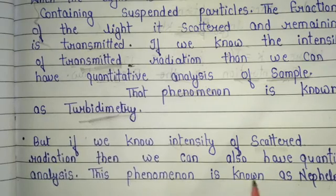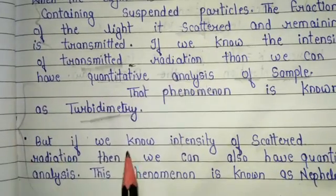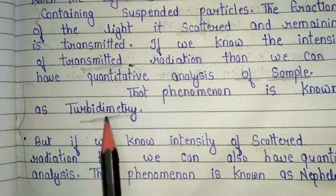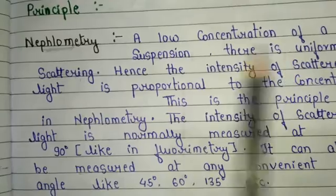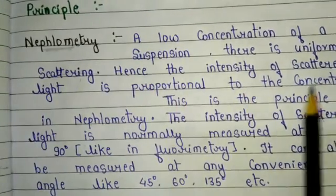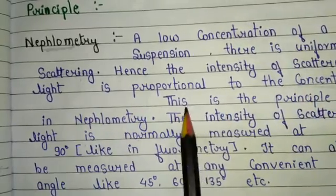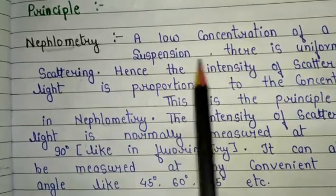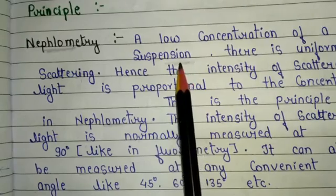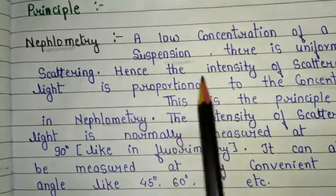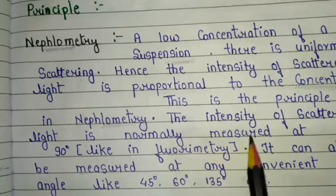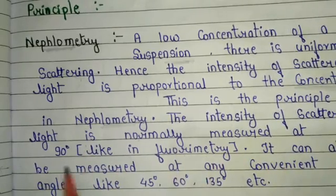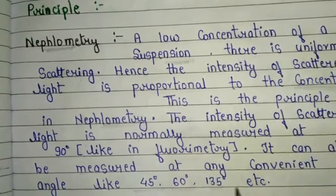These are the basic concepts of nephelometry and turbidometry. Now the principle part: the principle of nephelometry — at a low concentration of a suspension, there is uniform scattering, hence the intensity of scattered light is proportional to the concentration. The intensity of scattered light is normally measured at 90 degrees in nephelometry, but it can also be measured at any convenient angle like 45, 60, or 35 degrees.